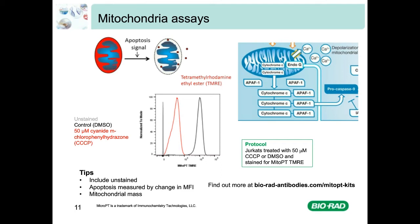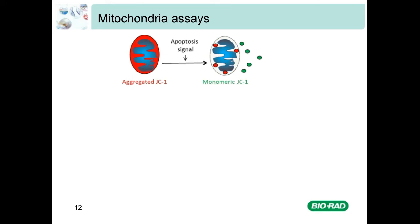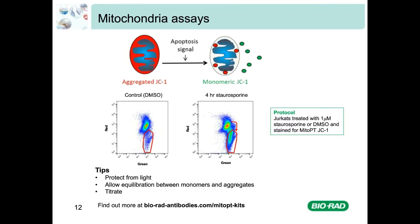The second mitochondrial dye is JC1, which also accumulates within mitochondria but forms red fluorescent aggregates. When membrane potential drops, JC1 disperses throughout the cell cytosol in its monomeric form, exhibiting green fluorescence. In this example, staurosporine was used to induce apoptosis in Jurkat cells — you can see a shift in the cell population in the dot plot, with cells moving to the lower gate, losing red fluorescence and gaining green. Tips for JC1: it is more photosensitive than other reagents so protect from light; allow enough time to reach equilibrium; and if used at too high a concentration it can generate artefacts, so titrate for your cell type.